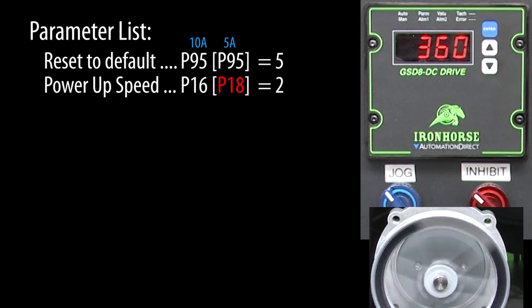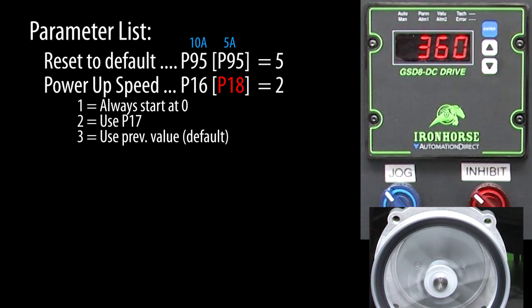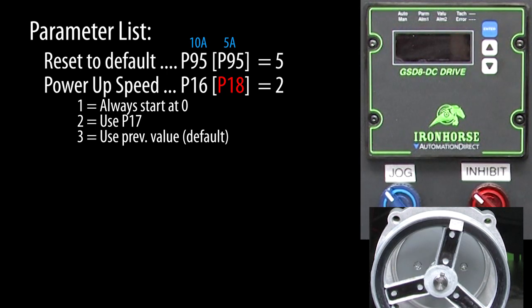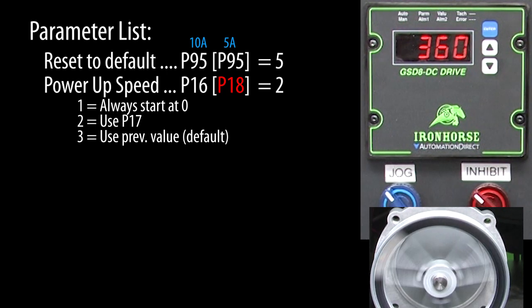Do you want the drive to automatically run when the power is applied or do you want to manually ramp it up to speed like we just did? You actually have three options via parameter 16: always start at 0 RPM, always use whatever is in parameter 17, or use the last entered value. The drive defaults to use the last entered value, so if I power down, give it a second, and bring it back up, sure enough it picked up right where we left off.